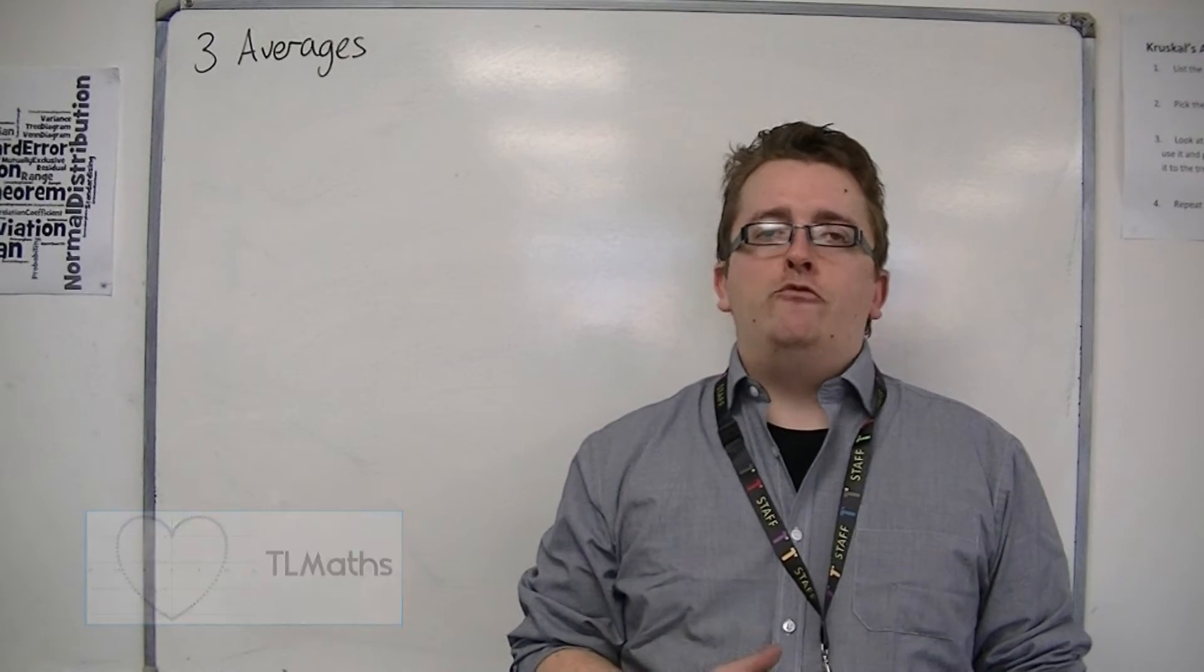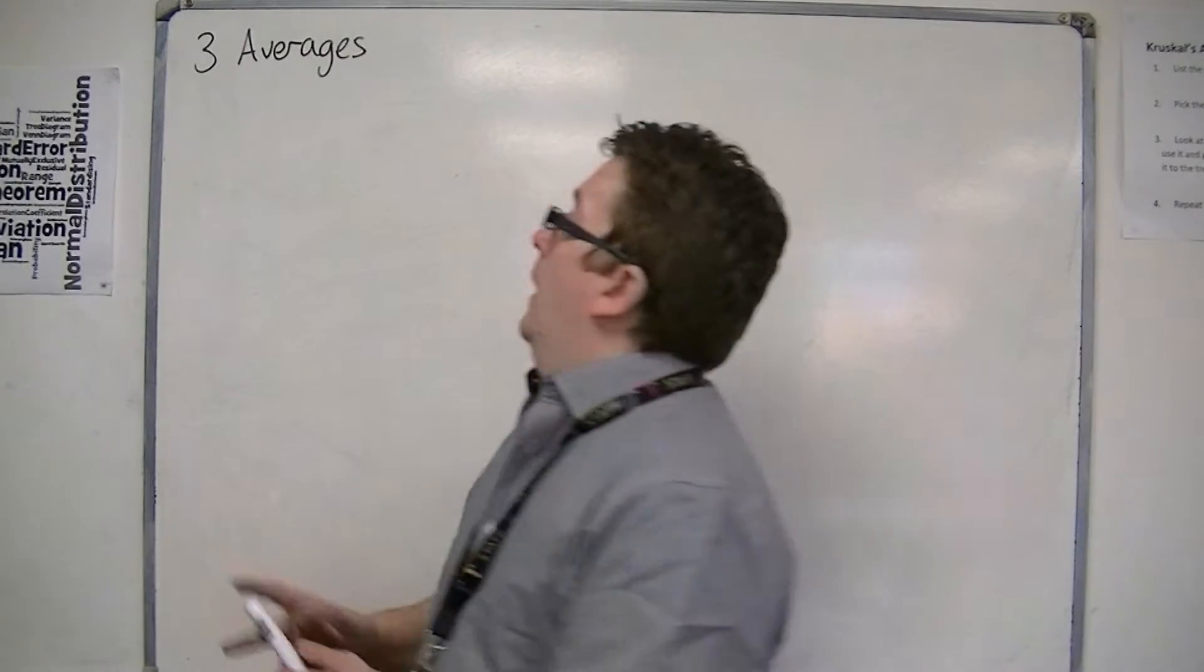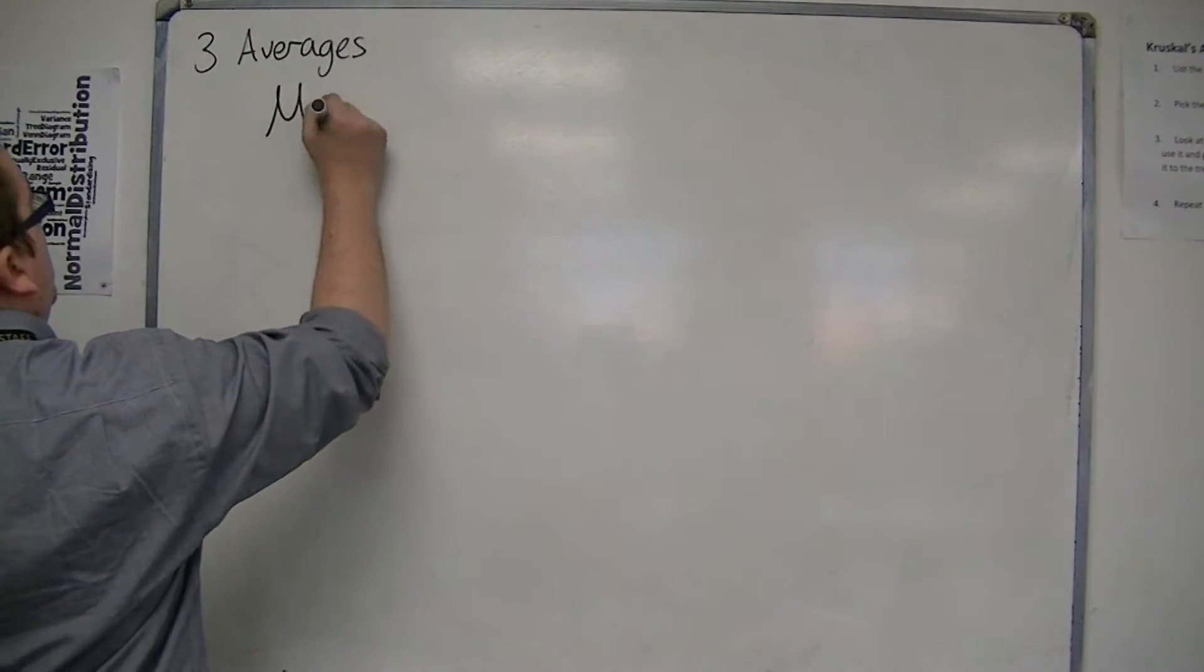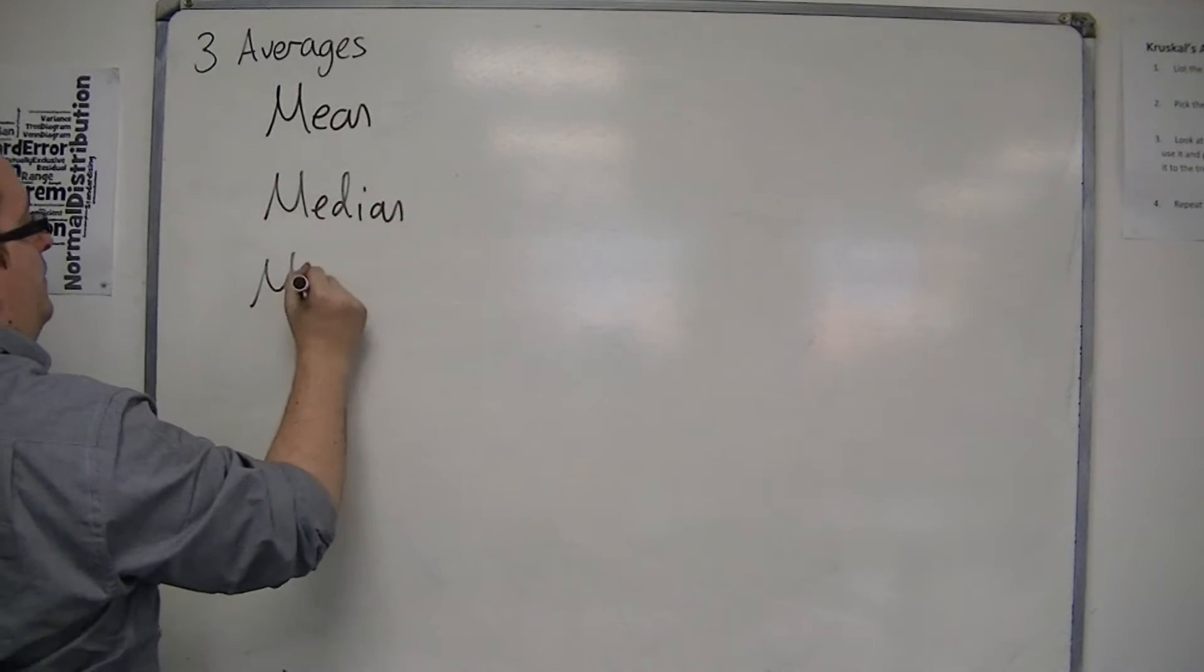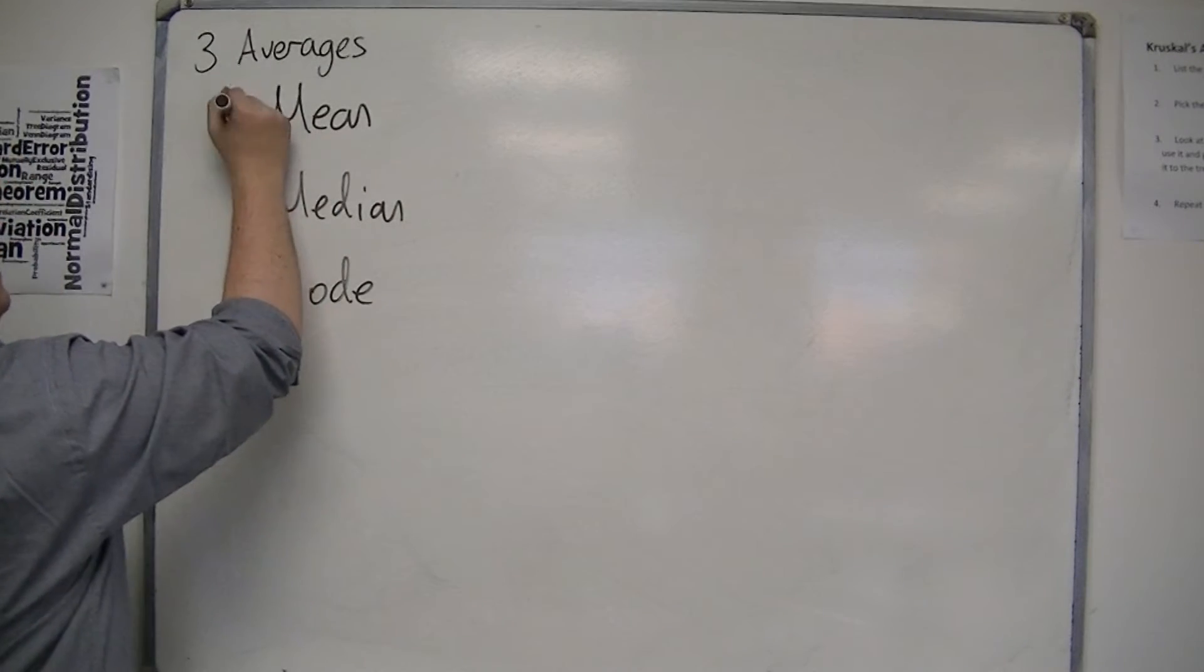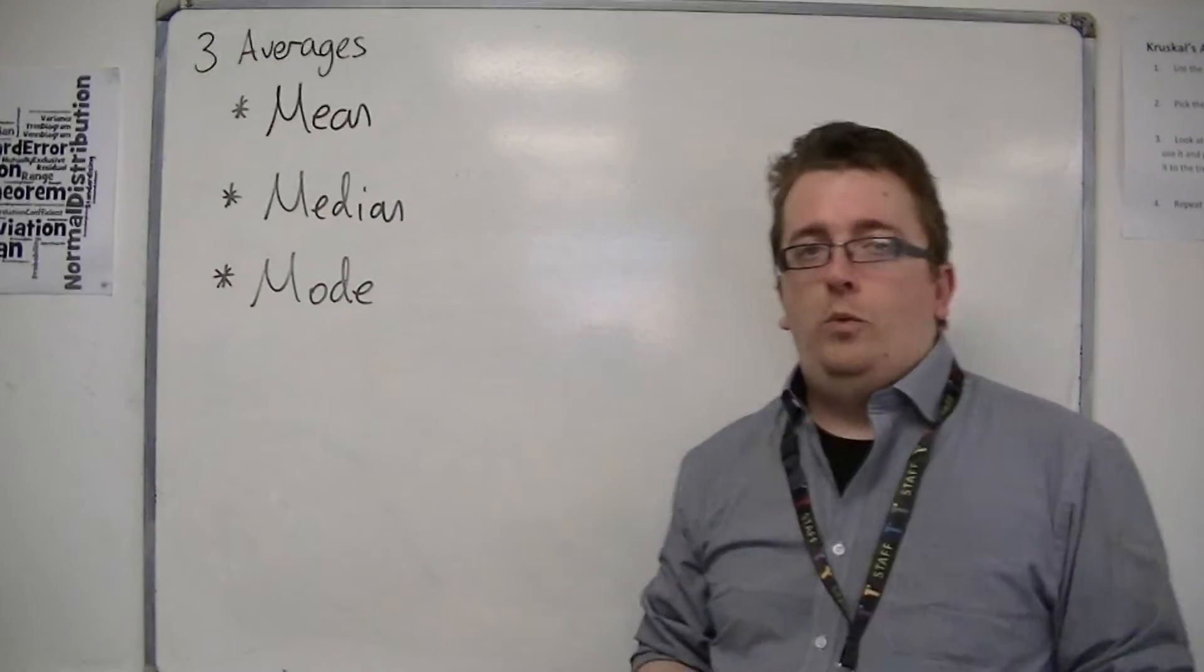So there are three types of average that we're going to look at in GCSE maths. There is the mean, the median, and the mode. These are the three types of average that we work with.